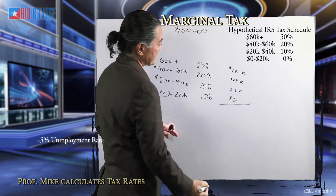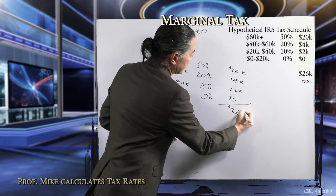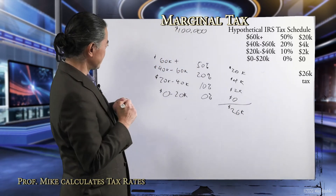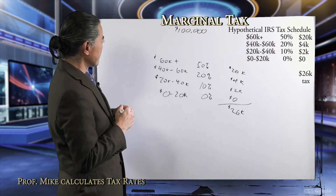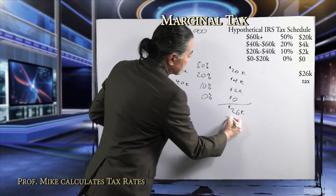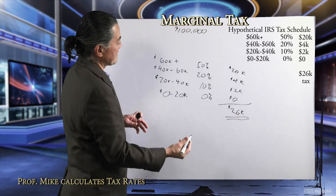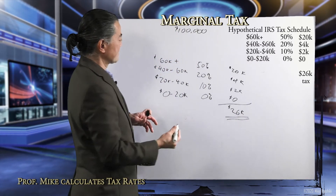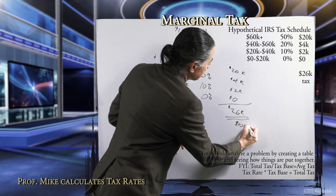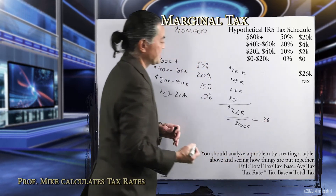We add up all that tax and it equals $26,000 of total tax. To figure out the tax rate, we just divide the total tax paid by income, which is $100,000. And this is 0.26, or 26%.